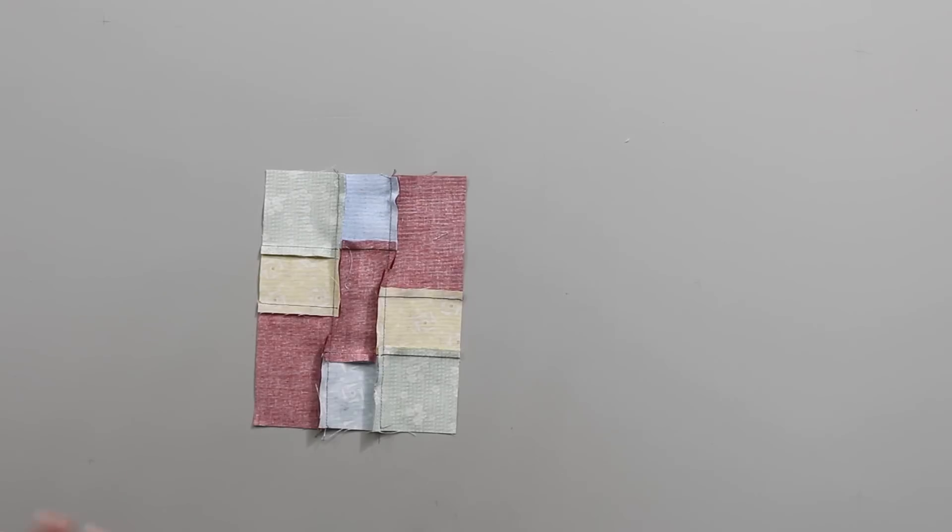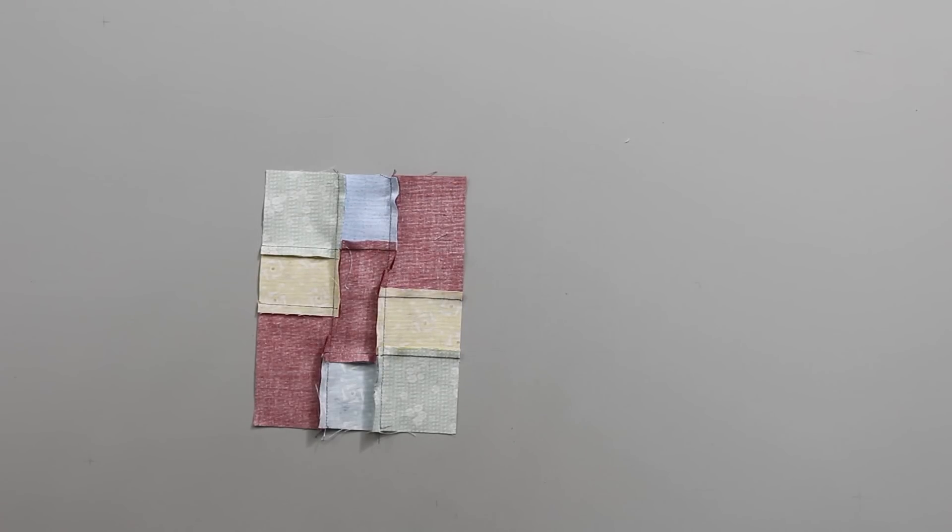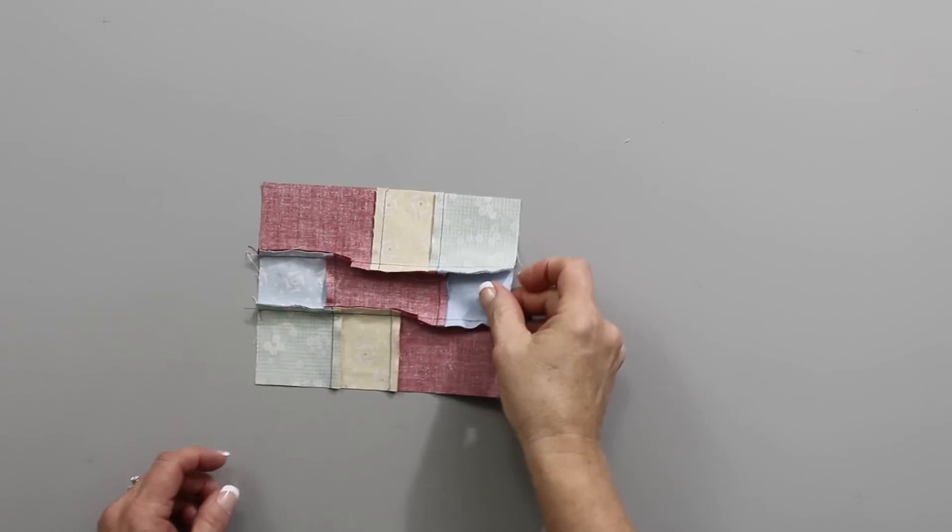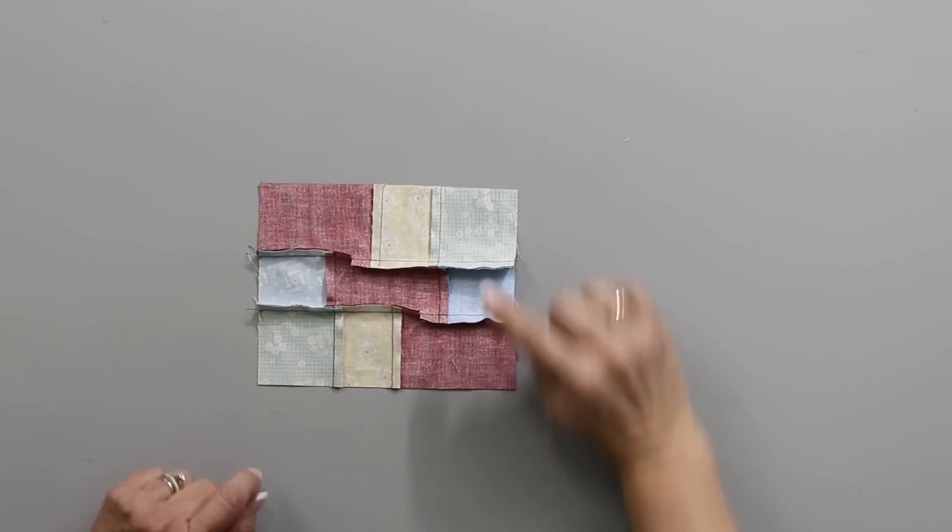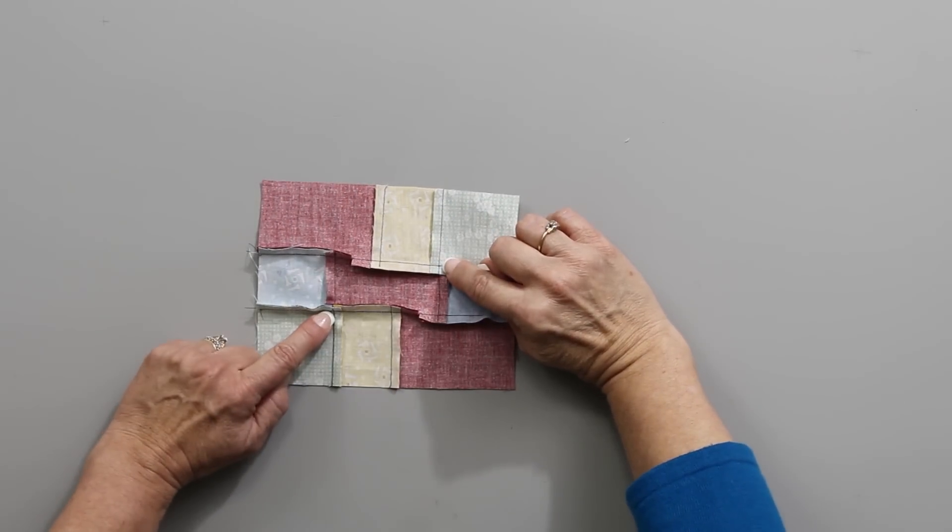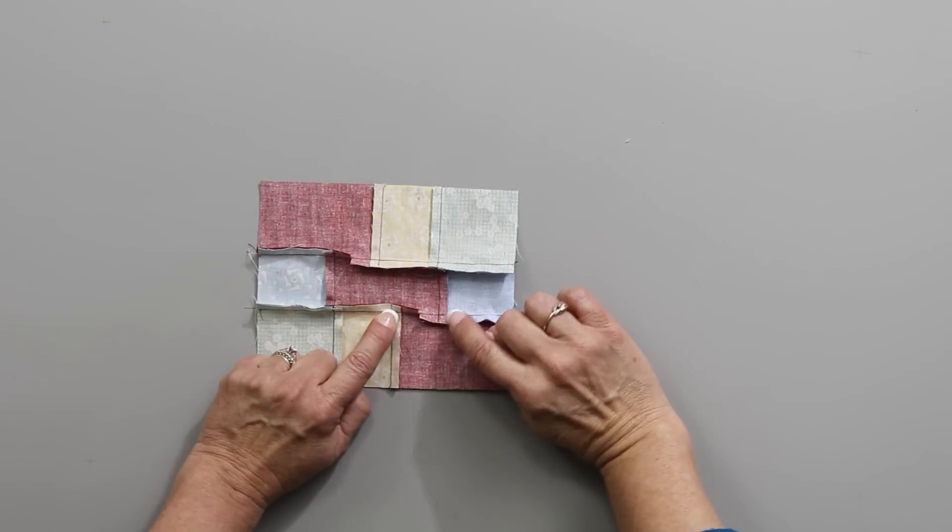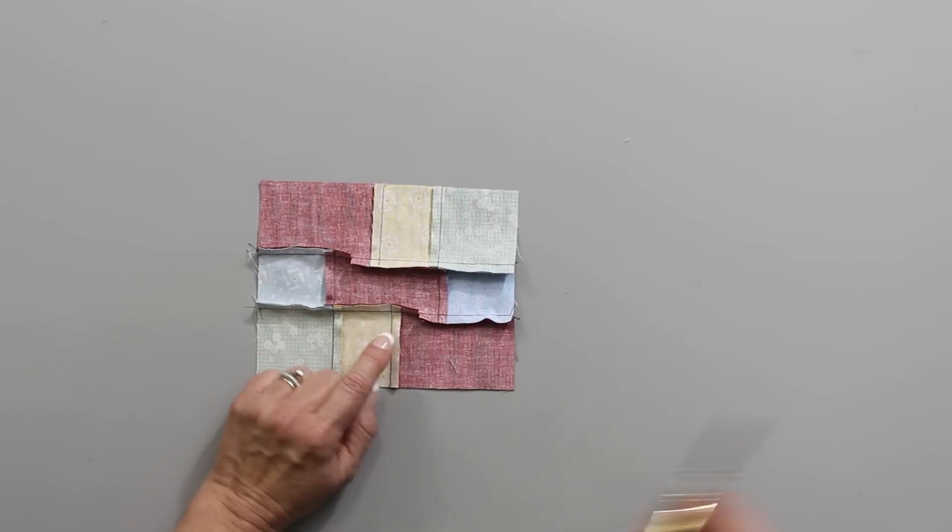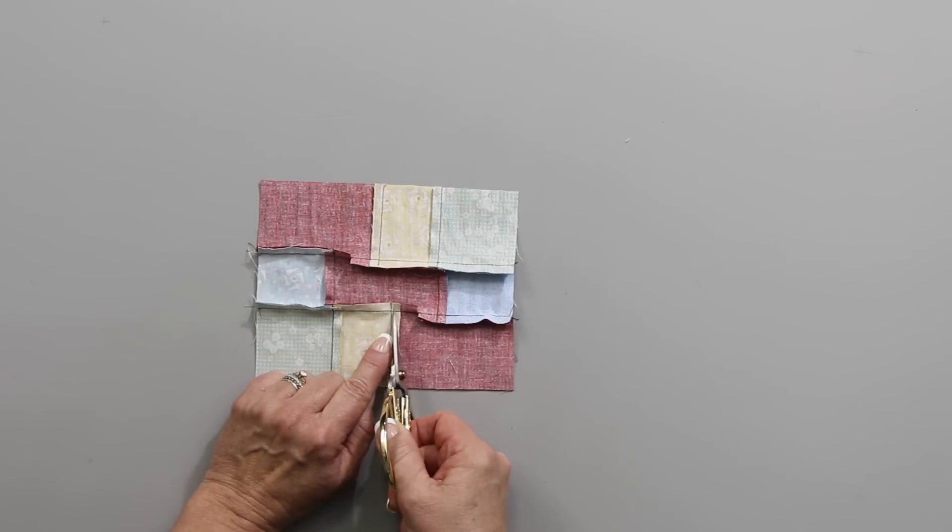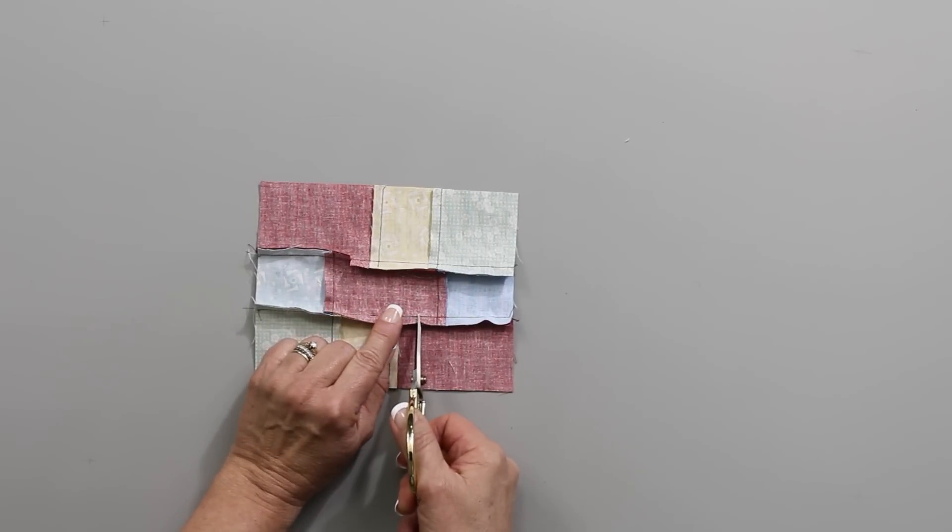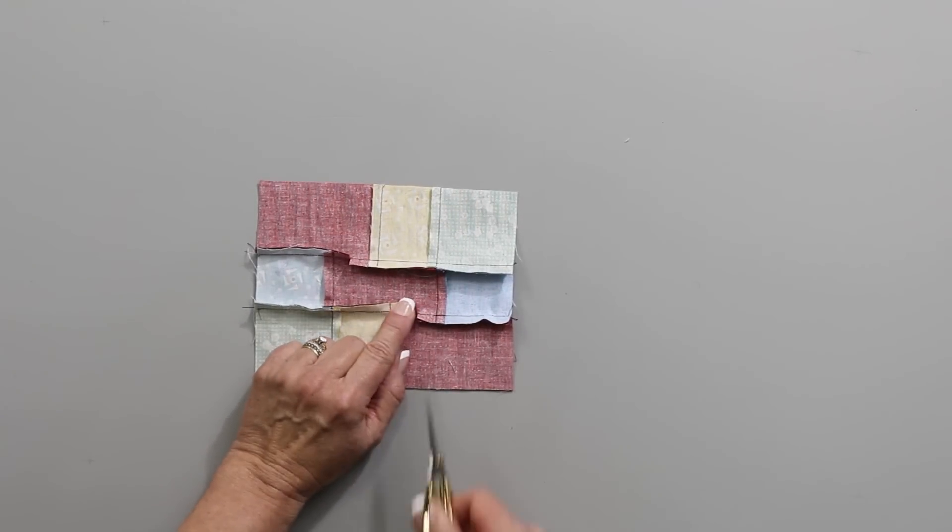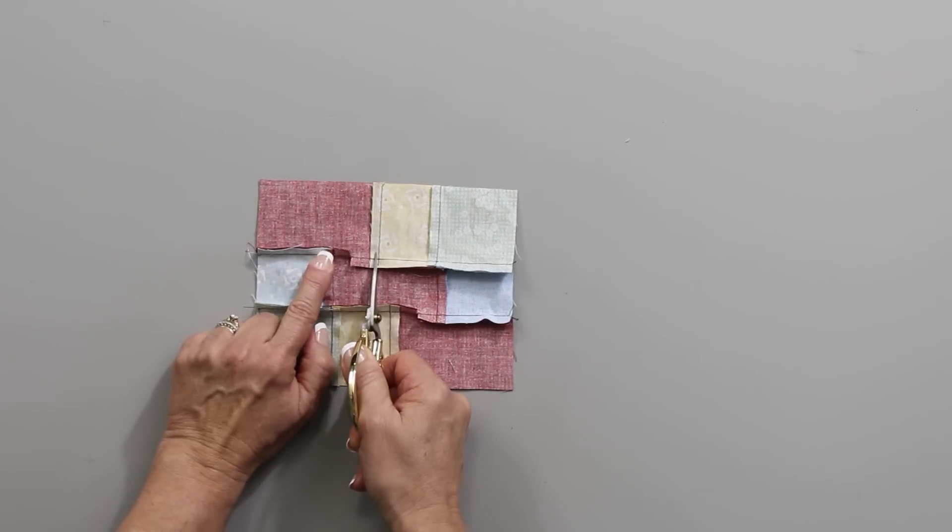Now what happens once you stitch this, you're going to head to the ironing board to give it a press. The seams really want to go a lot of different directions. So what we recommend is that you find the place that is in between the seams that aren't nesting. This is a nesting seam. I'm going to look at the section where the seams aren't nesting and I'm going to take a pair of scissors and halfway in between those two seams, I'm going to put a snip into the seam allowance.